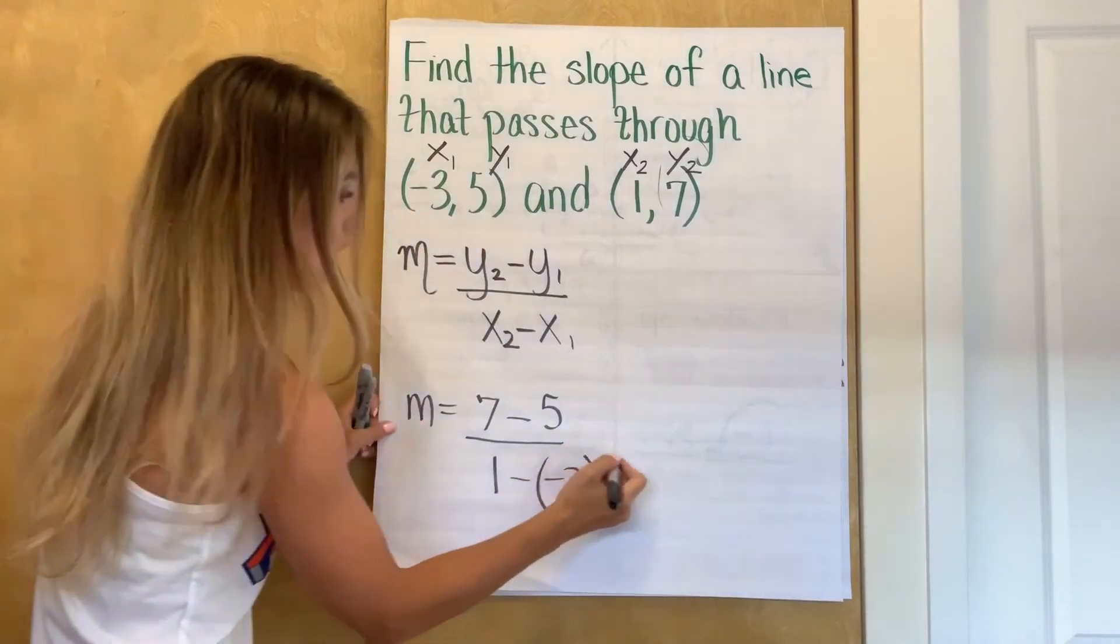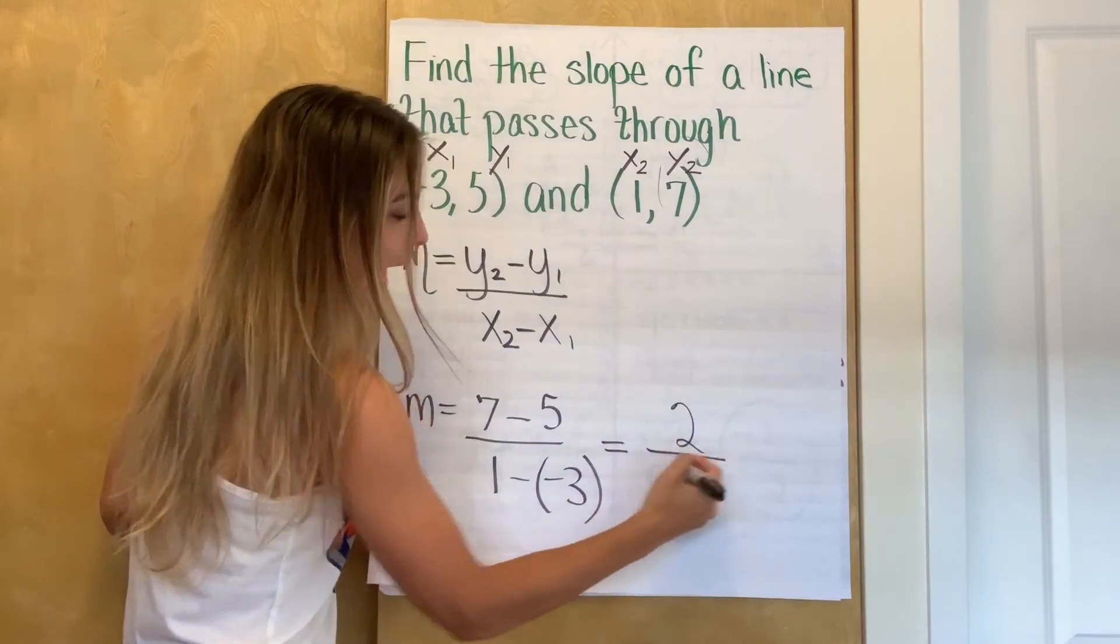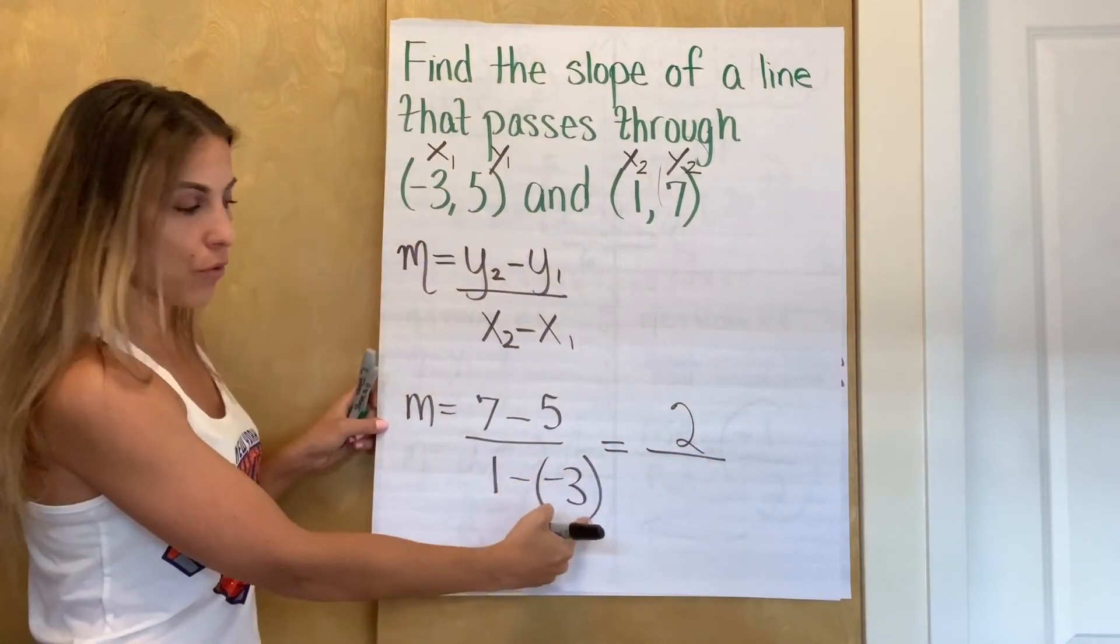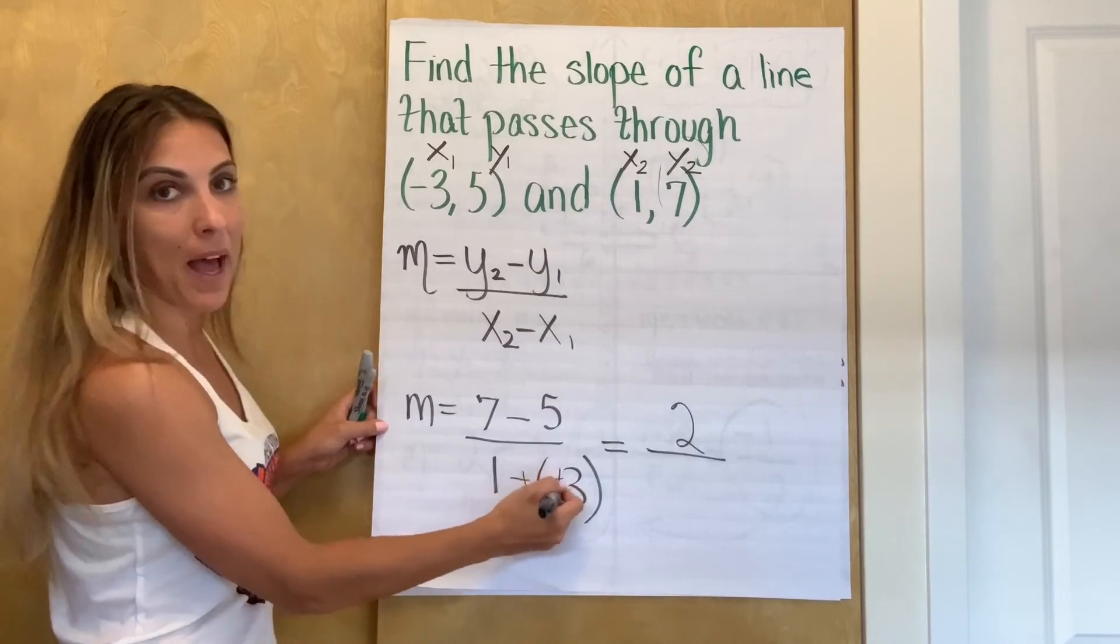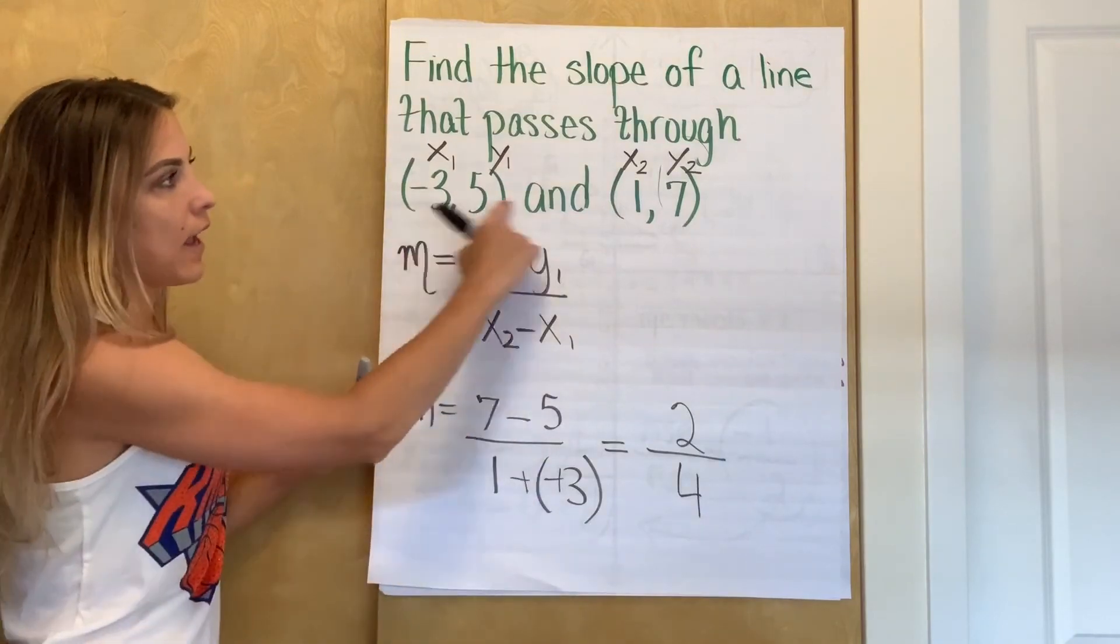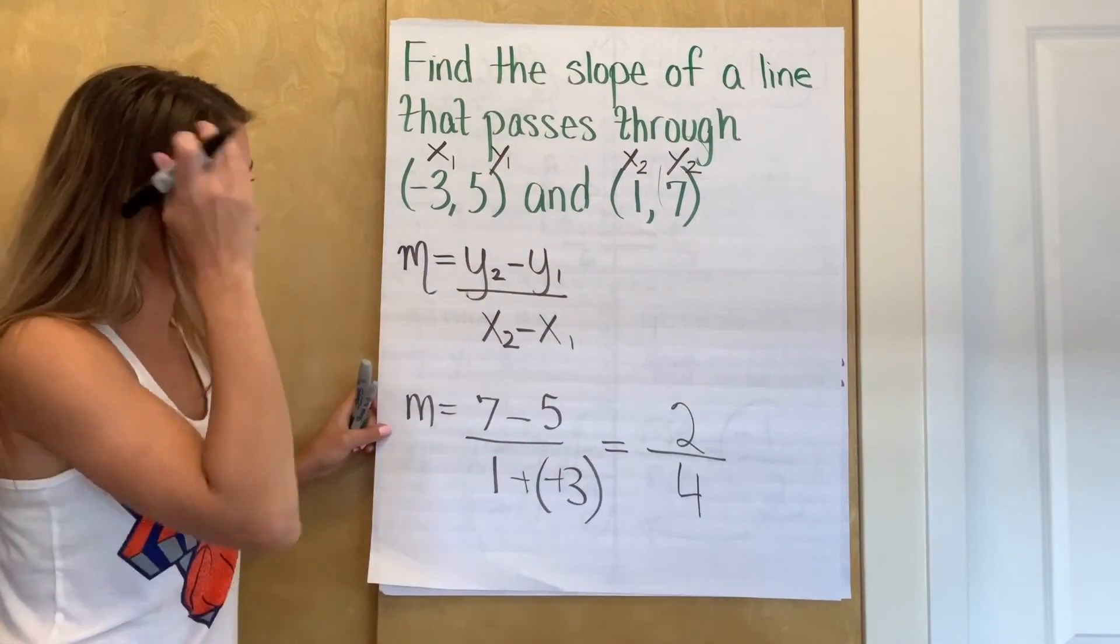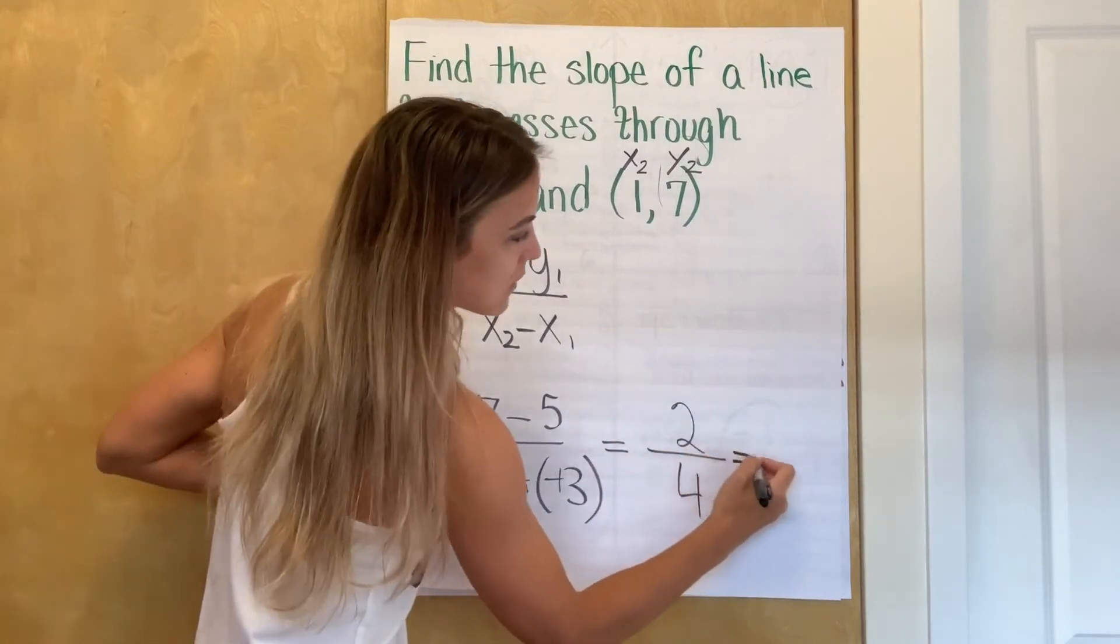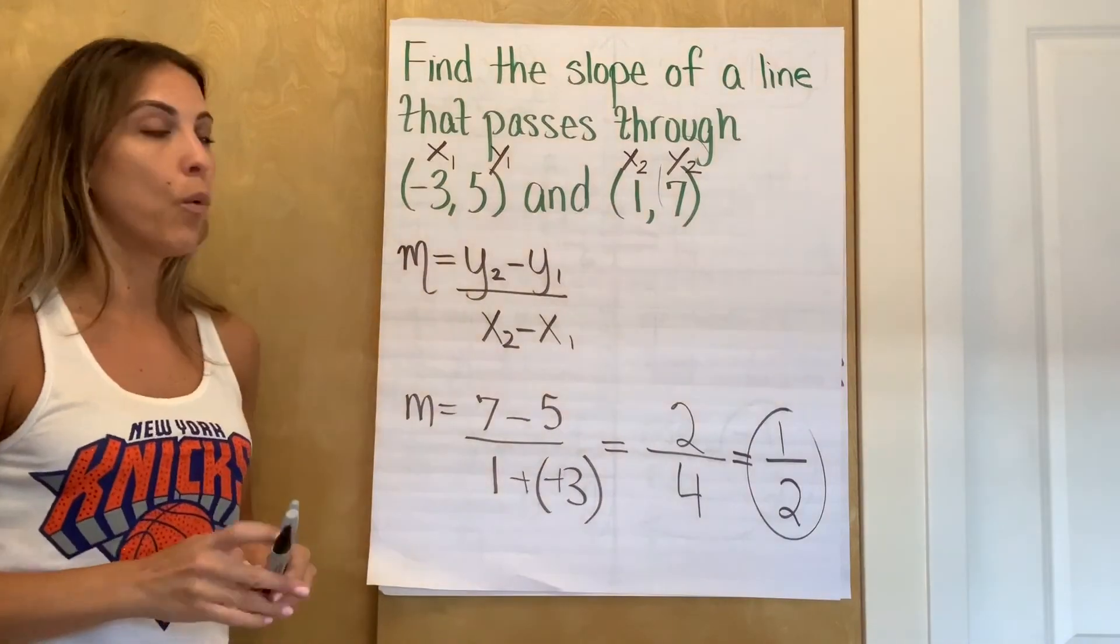And now I'm going to simplify seven minus five is two and one minus negative three. If you keep change, change, right? This actually becomes one plus positive three. So one plus three is four. So the slope of this line would be two over four, but you really always should simplify when possible. And two over four simplifies to one half. So the slope of this line would be one half.